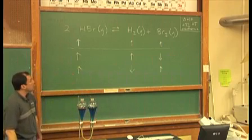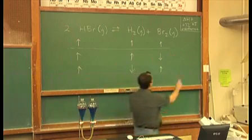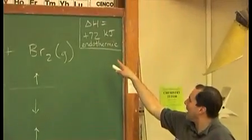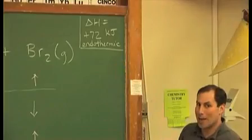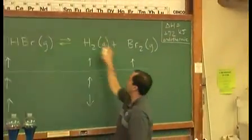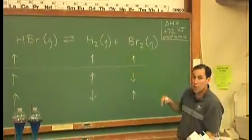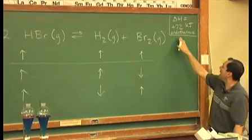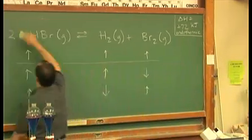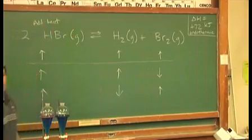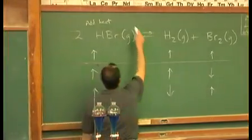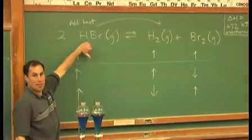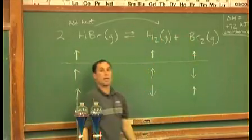Now let's talk about heating or cooling this reaction. Delta H for this reaction is positive — I'm not concerned with the magnitude, the 72 doesn't bother me. A positive number is endothermic, meaning energy is needed for this reaction to go from left to right. If we add heat — put a Bunsen burner underneath it, heat up the hot plate — you are going to give the reaction exactly what it wants, endothermic, and you're going to shift to the right. So the concentration of HBr is going to go down, and concentrations of products H2 and Br2 are going to go up.